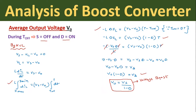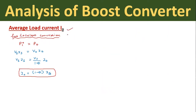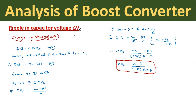Deriving average load current i0: for lossless conversion, input power equals output power — Pi = P0, so Vs·Is = V0·i0. Substituting V0 = Vs/(1−D) and simplifying, Vs cancels and the final equation for average load current is: i0 = (1 − D) · Is. This confirms that current bucking occurs in the boost converter — the current is stepped down.